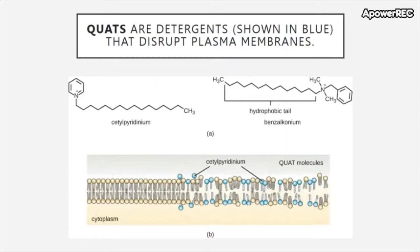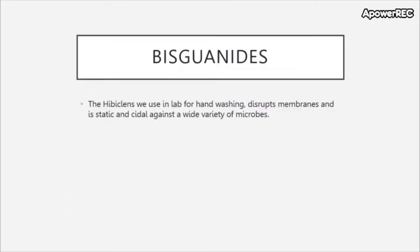Similar to surfactants, we have quats — which are detergents. Quats have a hydrophobic tail that inserts itself into the membrane, disrupting the bilipid membrane. Bisguanidines, like hibiclens, which is used in our lab for hand washing, also disrupt membranes and are both static and sidal against a wide variety of microbes.